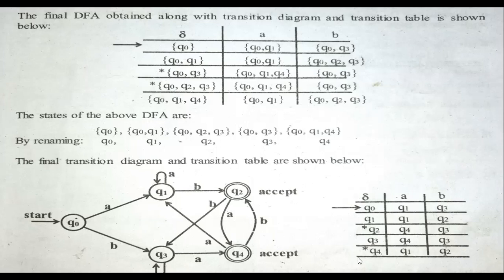Based on the transition table after renaming, we draw the DFA. For accepting strings ending with AB: the path goes Q0 → Q1 → Q2. For strings ending with B: the path goes Q0 → Q3 → Q4. This DFA design was also discussed when solving DFA pattern recognition problems previously.